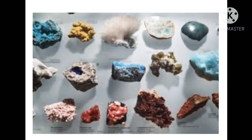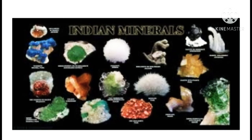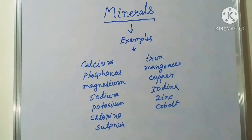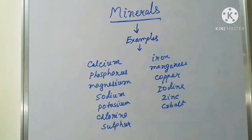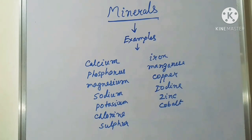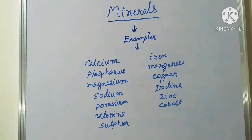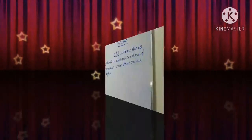Minerals are naturally occurring inorganic elements or compounds having an orderly internal structure and characteristic chemical composition, crystal form, and physical properties. Minerals are not manmade — they are naturally made, and they definitely have a crystal structure, fixed physical properties, and chemical composition.